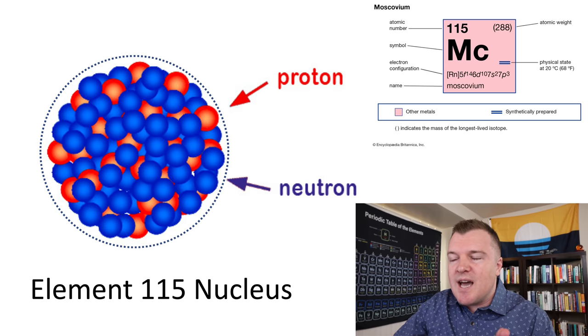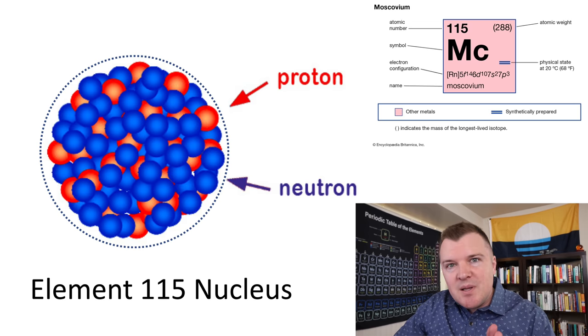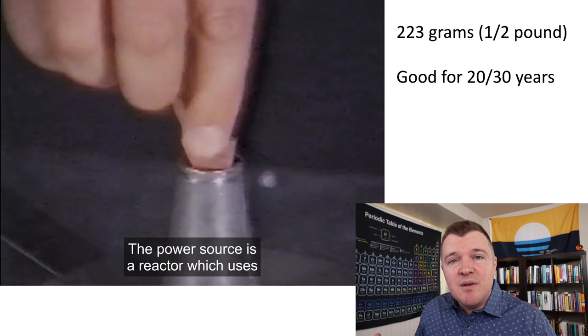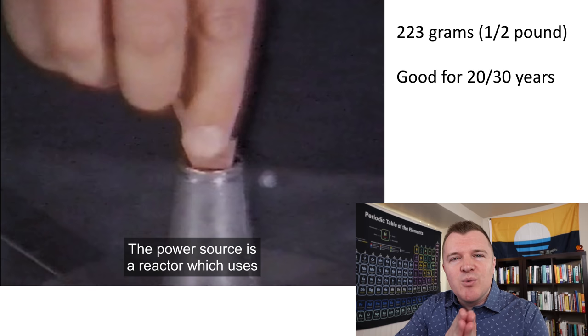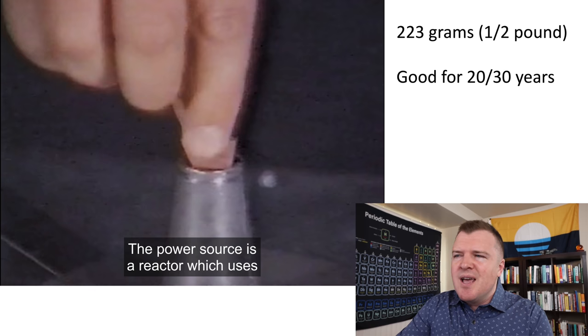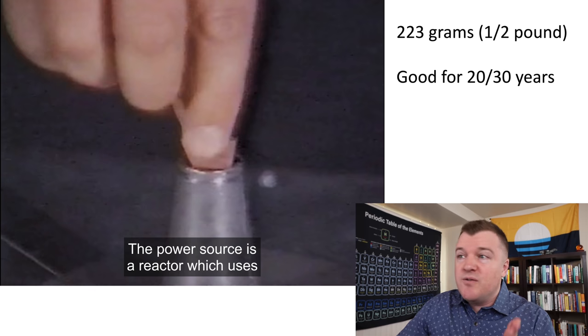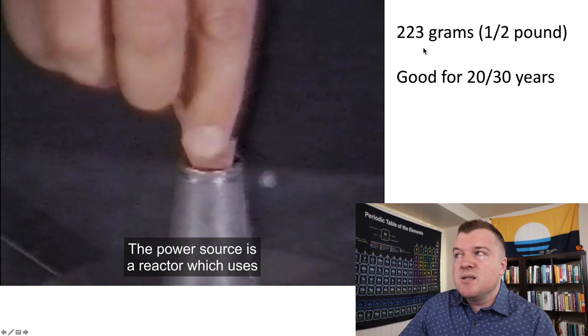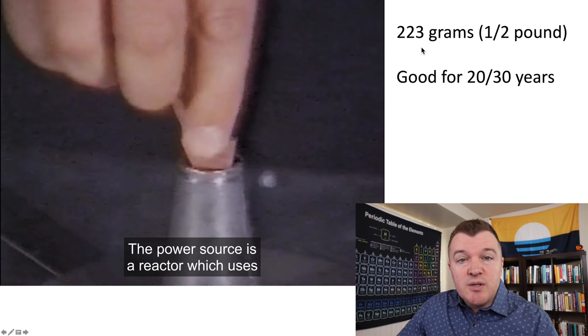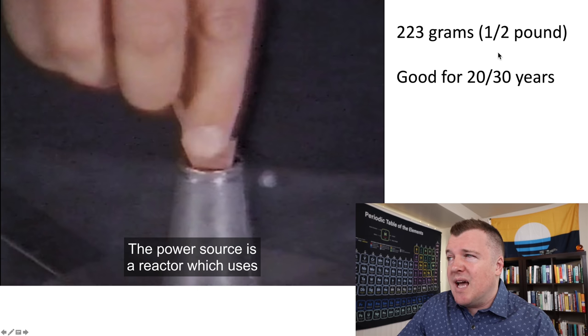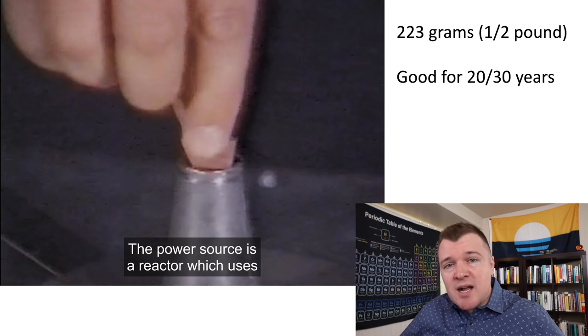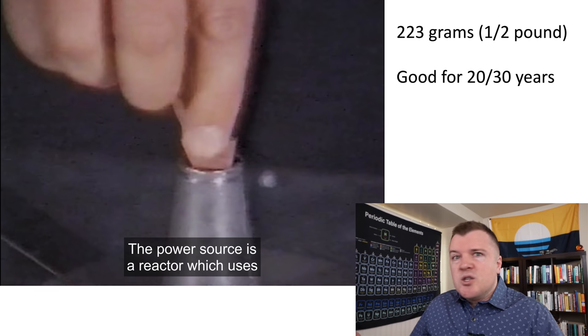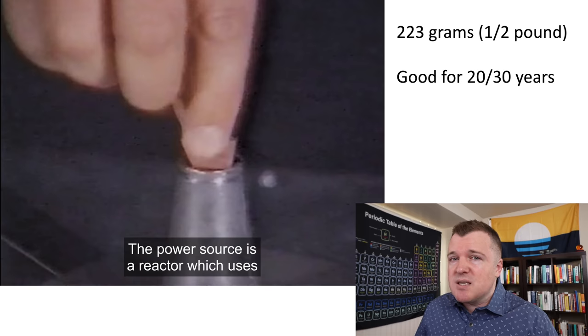And when this happens, you can start manipulating the atom to do some really amazing things. So I'm assuming at some point Element 115 has to be mined and refined and concentrated. And Bob describes the fuel rod as basically this little triangle shape. He says it only has to be 223 grams, which is about half a pound. And this fuel source in the reactor of his UFO can power the ship for 20 to 30 years, which is a fantastic claim.